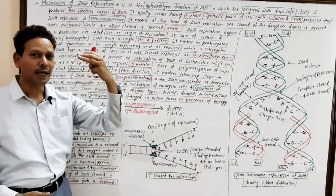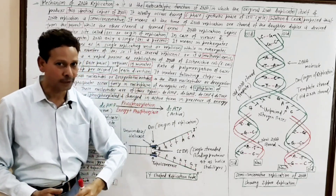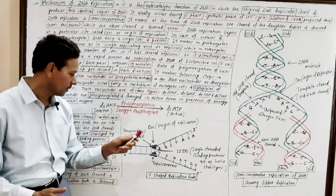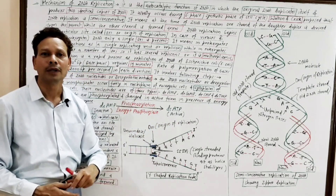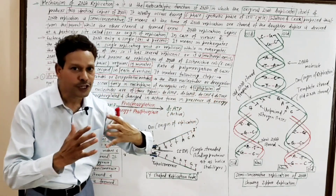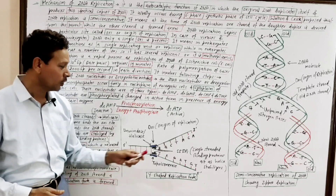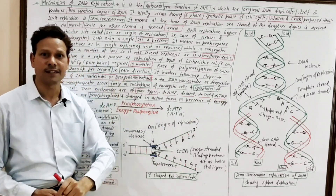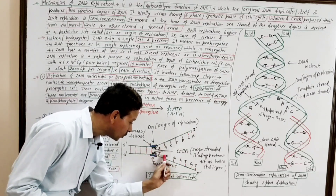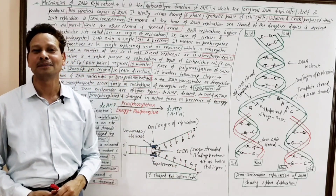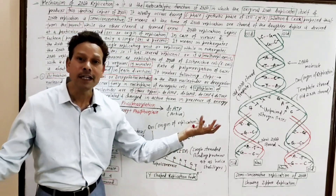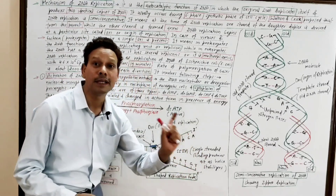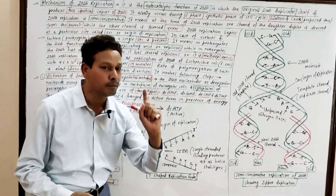At the time of DNA replication, at the ori site, the helicase enzyme causes uncoiling and unzipping of the DNA helix. The tension created by strand separation is released by topoisomerase, and the separated strands are stabilized by SSBPs — single-stranded binding proteins.